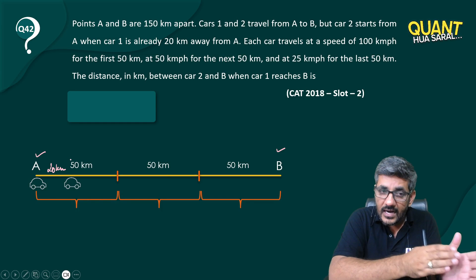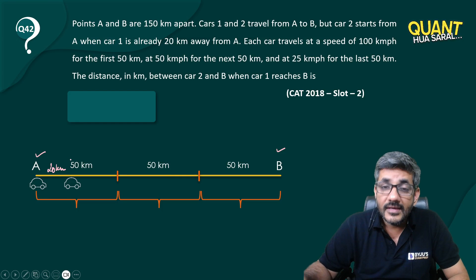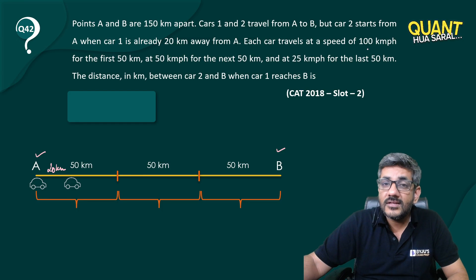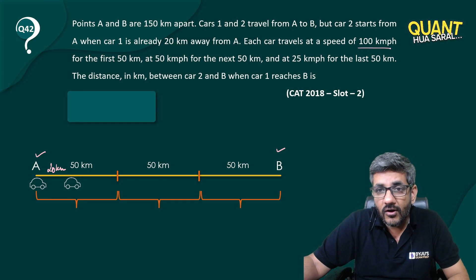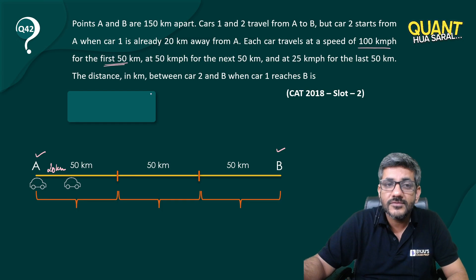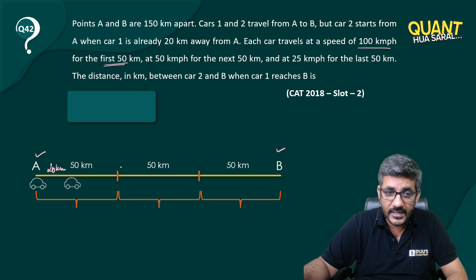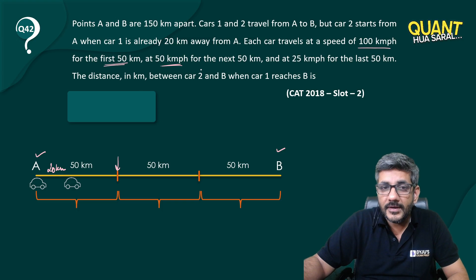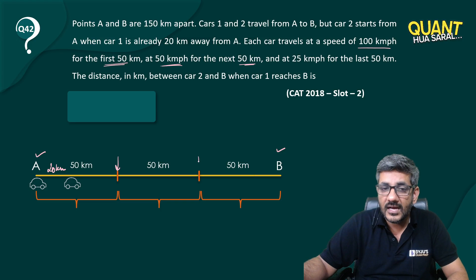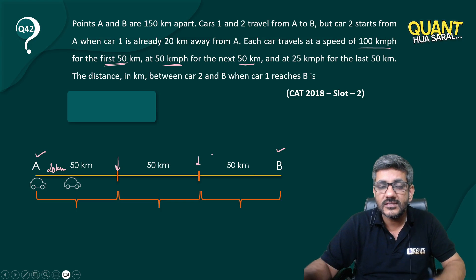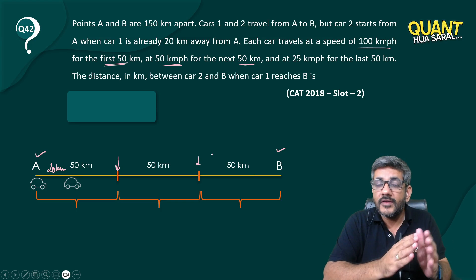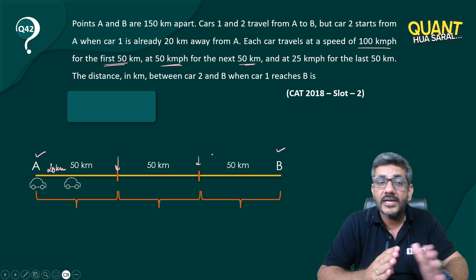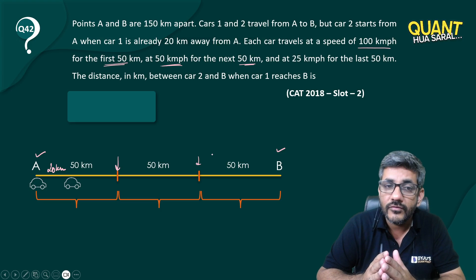Each car travels at a speed of 100 kilometers per hour for the first 50 kilometers — I have made that over here. Then 50 kilometers per hour for the next 50 kilometers, and 25 kilometers per hour for the last 50 kilometers.